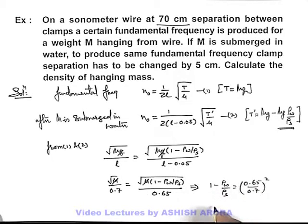On simplifying the values, we'll get density of solid to be 7.26 × 10³ kg/m³. That'll be the answer to this problem.